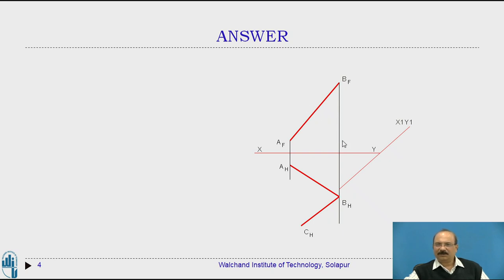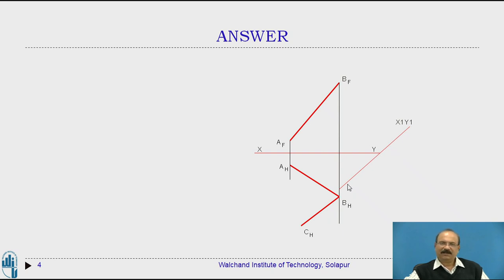When the reference line becomes parallel to AFBF, the view obtained will be a true length. To draw a perpendicular line to a given line, one line must be a true length — this is the major requirement. That is why we have drawn X1Y1 parallel to AFBF. The gap between X1Y1 and the existing lines can be taken at any convenient position, as long as it does not overlap the existing line work.